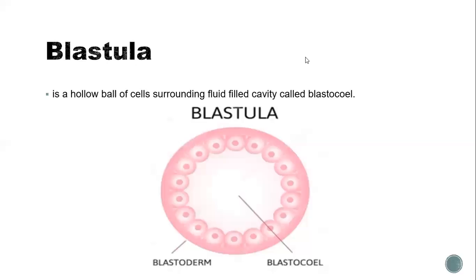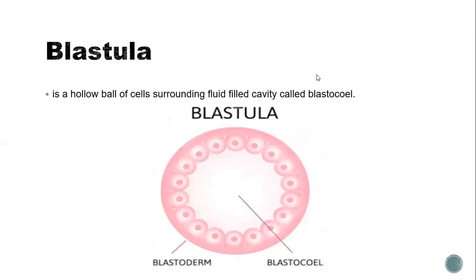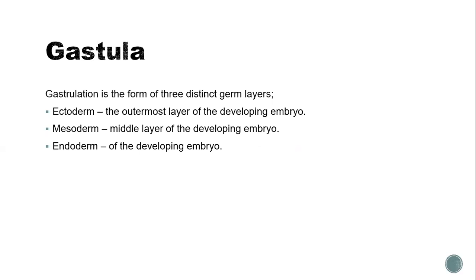At this stage, the cells of the blastula start to migrate and rearrange themselves into three germ layers known as parts of the gastrula. Gastrulation forms three distinct germ layers: the ectoderm, the outermost layer of the developing embryo; the mesoderm, the middle layer of the developing embryo; and the endoderm, the innermost layer of the developing embryo.